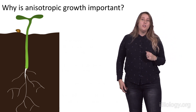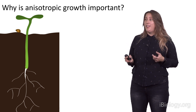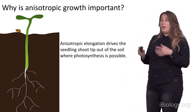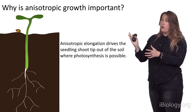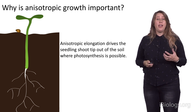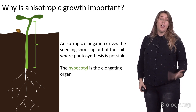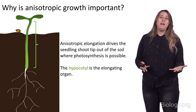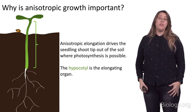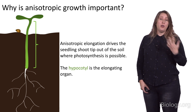Why is anisotropic growth even important? This young seedling has a job to do — it needs to elongate and drive the seedling shoot tip out of the soil so that photosynthesis can become possible. In Arabidopsis, this is done by expanding one organ in particular more in length than in width, and that organ is known as the hypocotyl. The hypocotyl elongates, pushes the shoot tip out of the soil so photosynthesis can start, and that plant can start succeeding in its goal of growing and reproducing by fixing carbon.